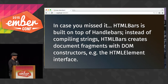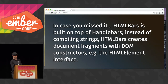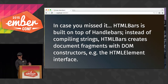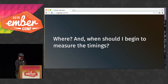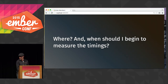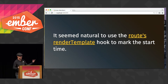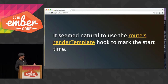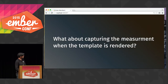In case you missed it, we have HTMLBars now — thank you to those who did that for us. So that was my curiosity: let's see what this thing can do for me. Where should I begin to measure the performance metrics for rendering a template? We've been talking about Ember's primitives, and we have a router that has this great hook for rendering the template. Apparently everything's done and ready to go when you enter this hook, so right there I can just mark the time and measure it.